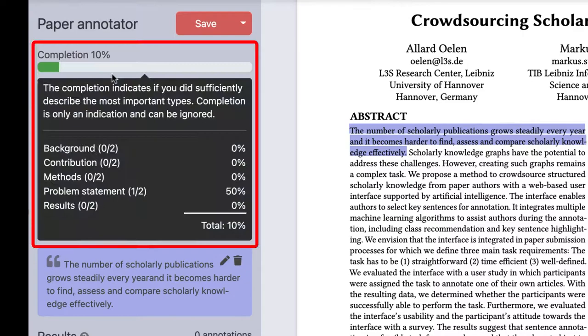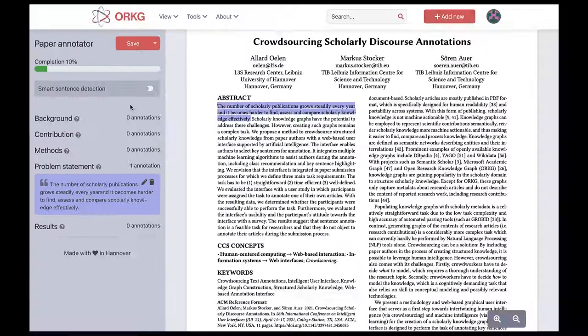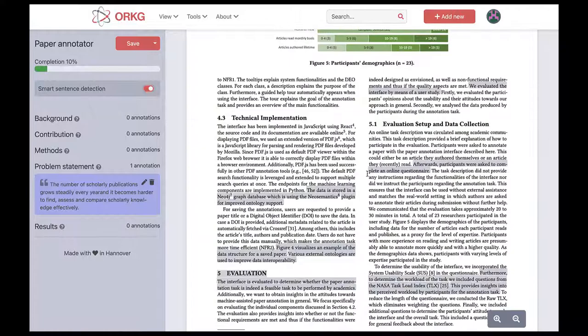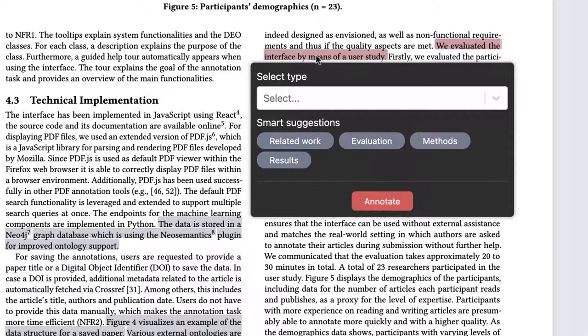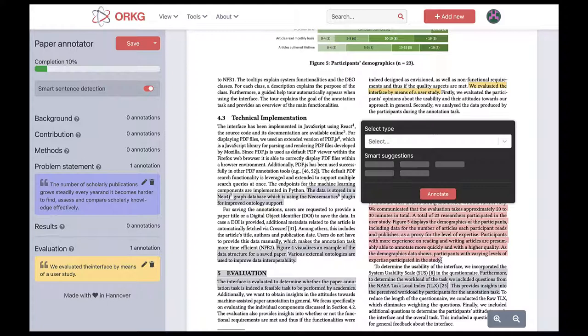The completion bar indicates if there are at least two annotations for the five most important classes. We can enable the smart sentence detection, which will highlight potentially interesting sentences throughout the article. A highlighted sentence can be annotated by clicking on it and then selecting an appropriate class.